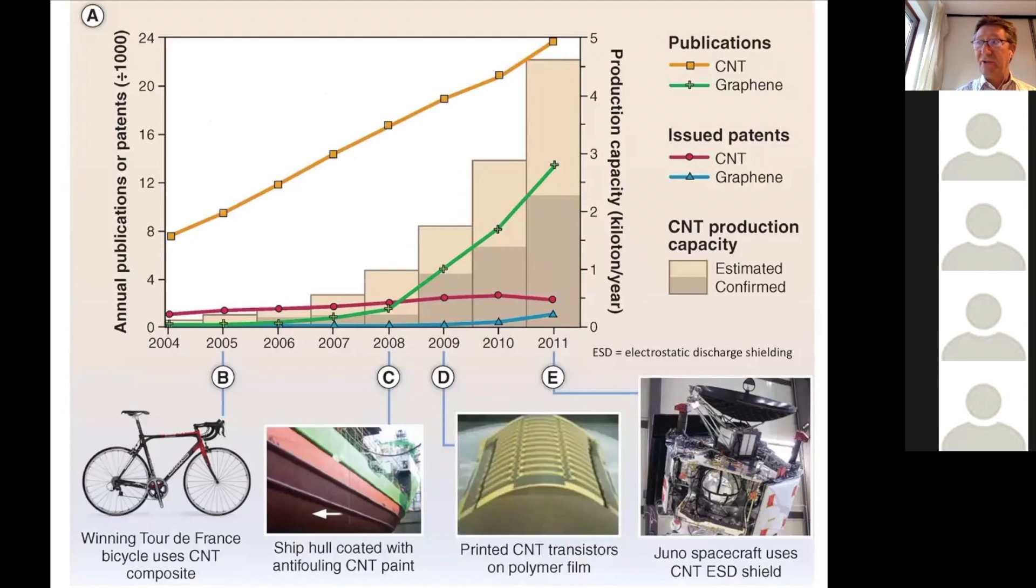The thing is that carbon nanotubes have really actually ended up in products. You can buy a tennis racket that's reinforced with carbon nanotubes.